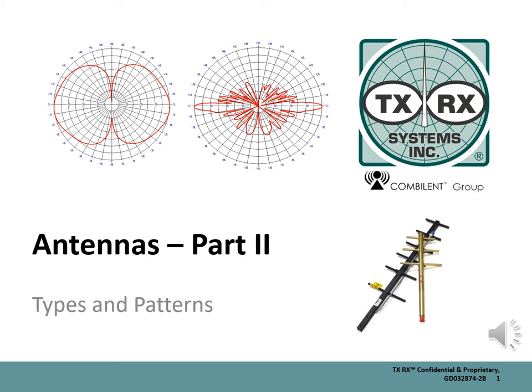In its simplest form, an antenna is a piece of wire in the air hung between two trees or poles. The impact of that wire or antenna, and knowing what will work best in your system or knowing proper mounting and installation, will be vitally important.